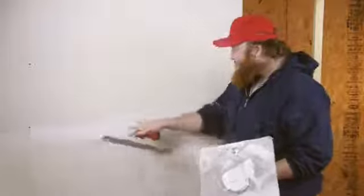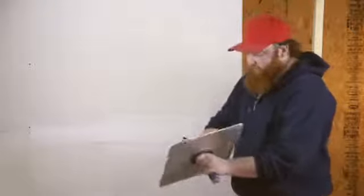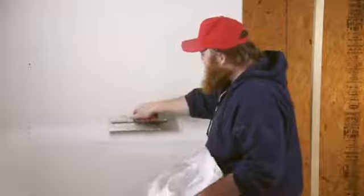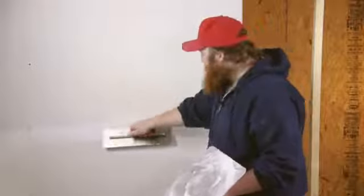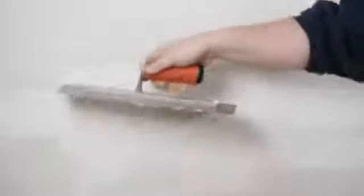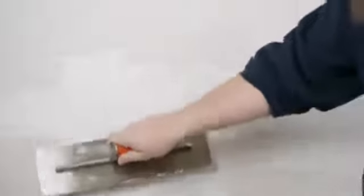So after that dries, we're going to take our drywall mud, get quite a bit on there, we're going to go up above our seam a little bit and work our way down. As you can see, we're about two or three inches above our seam on both sides. We want to do that all the way across our seam.